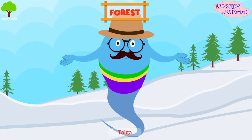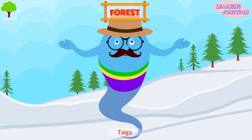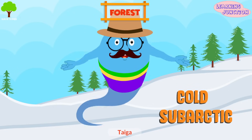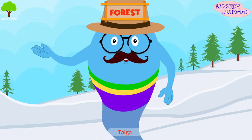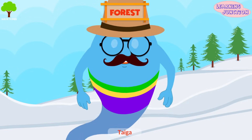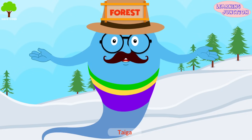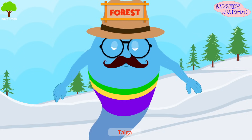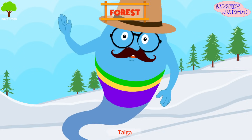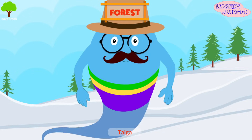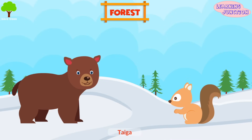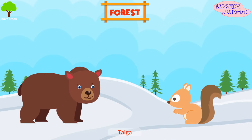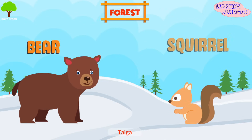The taiga is a forest of the cold sub-arctic region. Long, severe winters last about six months, with average temperatures below freezing. Mammals living in the taiga include bears and squirrels.